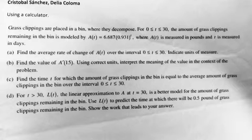Part C. Find the time t for which the amount of glass clippings in the bin is equal to the average amount of glass clippings in the bin over the time interval 0 is less than or equal to t is less than or equal to 30.